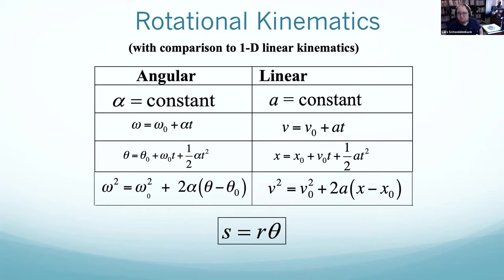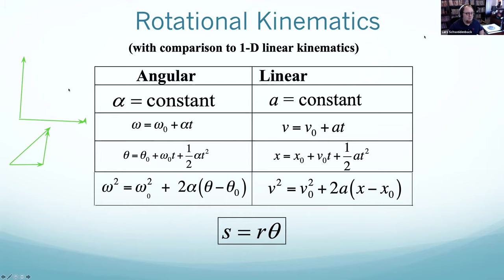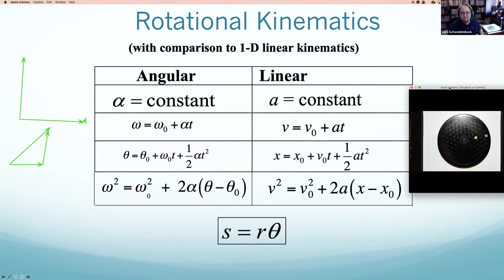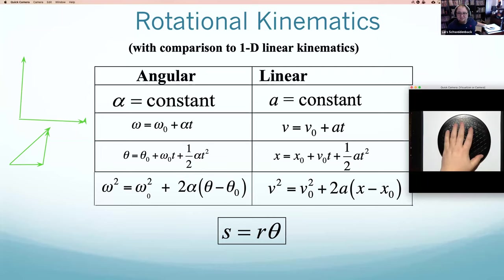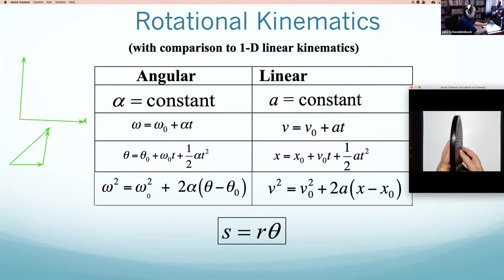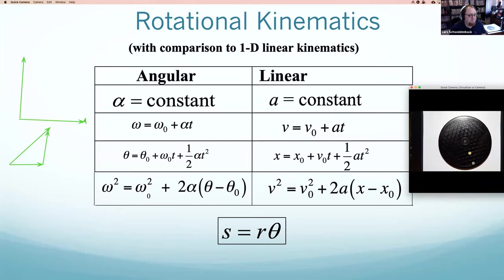These equations are actually simpler than the linear ones. For kinematics we had to deal with two dimensions — projectile motion with stuff going this way and that, components to break apart. For rotational or angular kinematics, all you have is: is it going counterclockwise or clockwise? You never deal with two-dimensional components because there's only one dimension — it goes one way or the other. So rotational kinematics will actually be simpler than linear kinematics.